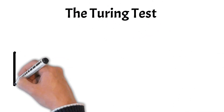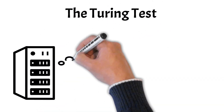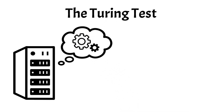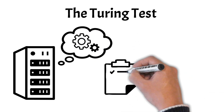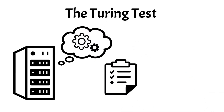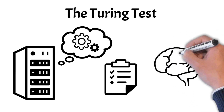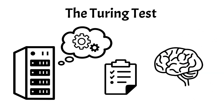Ever wondered if a computer could think like a human? Could a machine ever truly mimic human intelligence? This intriguing question was at the heart of a bold idea known as the Turing test. In this video, we're going to analyze just that. Stick around to discover how this test challenges the boundaries between human and machine intelligence.